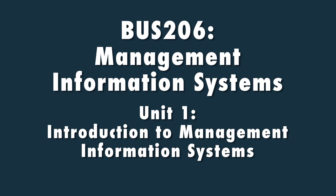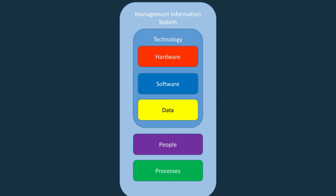In Unit 1, you learned about the components of a Management Information System: technology, which includes hardware, software, and data; as well as people and processes. You also learned a little about the history of Information Systems and how they bring competitive advantages to companies.